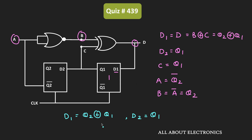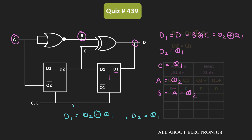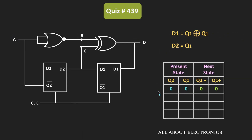With the clock pulses, depending on the initial value of Q2 and Q1, the D1 and D2 inputs will change, and because of that the values of inputs A, B, C, D will also change. There are 4 different possibilities for the initial values of Q2 and Q1. Let's say the initial value of Q2 and Q1 is 0 and 0. In that case D1 = 0 and D2 = 0, so at the next state Q1 and Q2 will also remain 0. For a D flip-flop the output is same as the input, so the values remain unchanged.